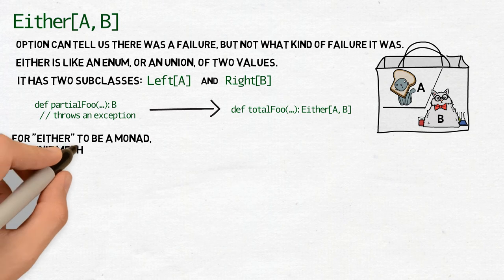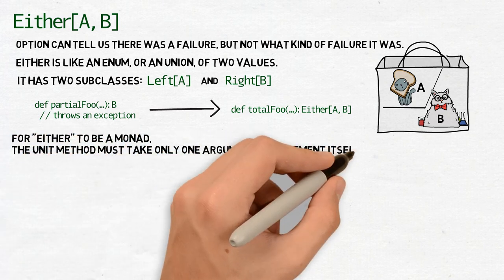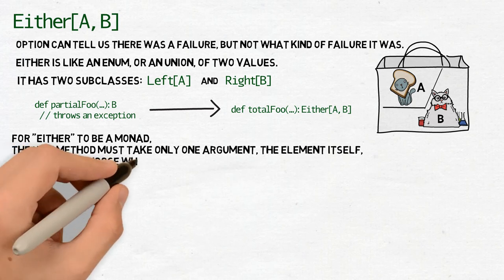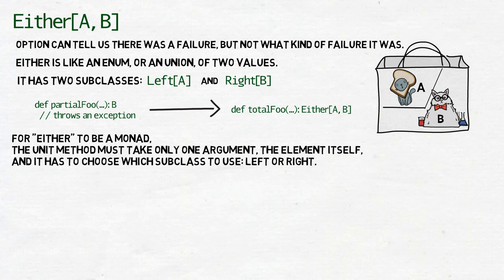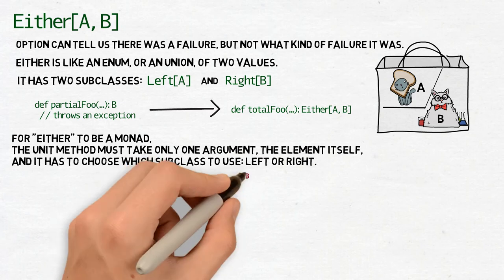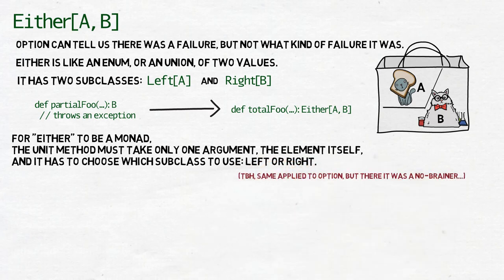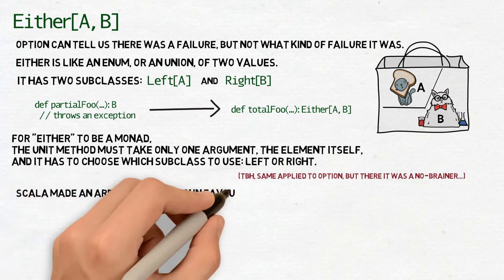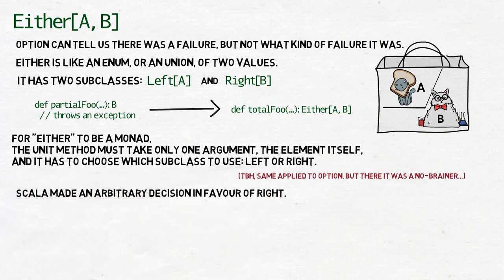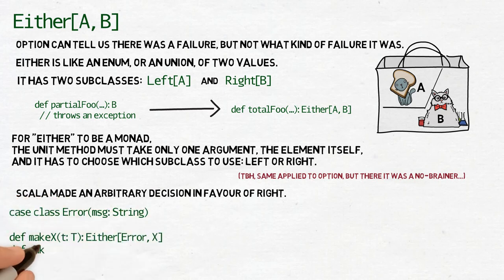And there is a reason why I chose B as the type of the valid result. For either to be a monad, there has to be a preference. The unit method must take only one argument, the element itself, and it has to choose by itself which subclass to use. Also, the flatmap method needs to choose what path does it take. Do we flatmap to the left or to the right? Scala made an arbitrary decision in favor of right of B, this forever oppressing left-handed people like me. Thanks to that, we can now chain eithers.